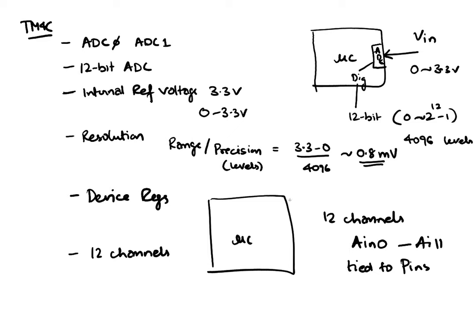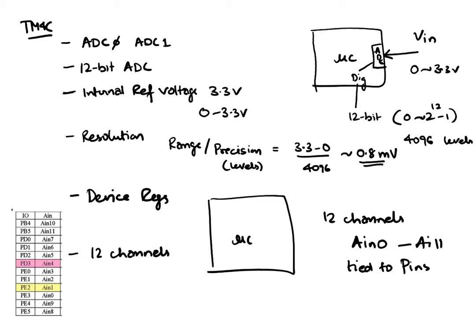For us, those pins — I'm going to put that here — channel one is PE2, channel two is PE1, channel three is PE4. The number next to this is the channel number and the corresponding pin. In our ADC lab, lab eight, we will be using PD2, which is channel five, AIN5. As it turns out, we have been using channel four, which is PD3, all along — that's what Texas instruments was using.